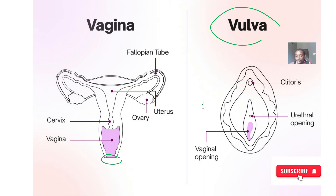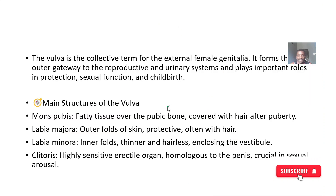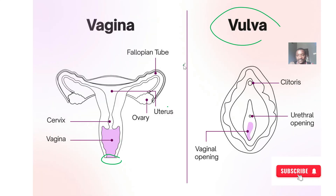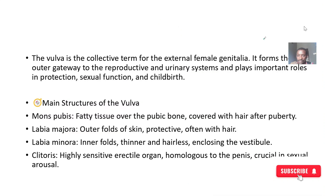The vulva is actually the collective term for the external female genitalia — everything that makes up the external female genitalia. It's like the outer gateway to the reproductive and urinary systems. The vaginal opening serves the reproductive system, and the urethral opening serves the urinary system.